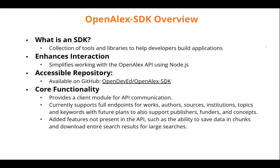The SDK provides a client model that handles all API communication, making it straightforward to perform searches, retrieve, and save data. It currently supports full endpoints for works, authors, sources, and institutional topics, with future plans to add support for publishers, funders, and concepts. Additionally, the SDK provides features not available in the API directly, such as the ability to save data in chunks, download entire search results, and perform snowballing — extracting all publications related to a given search.